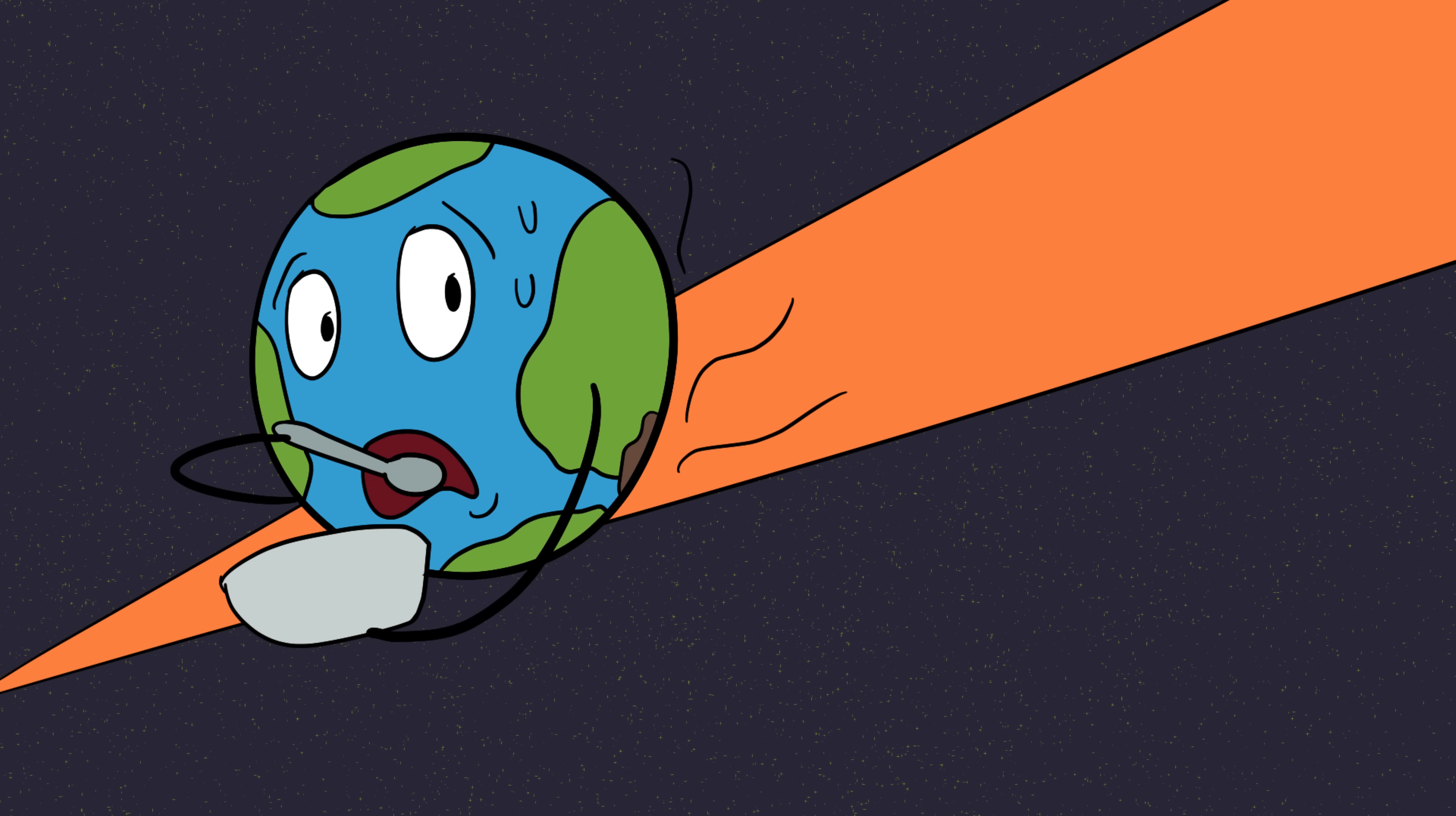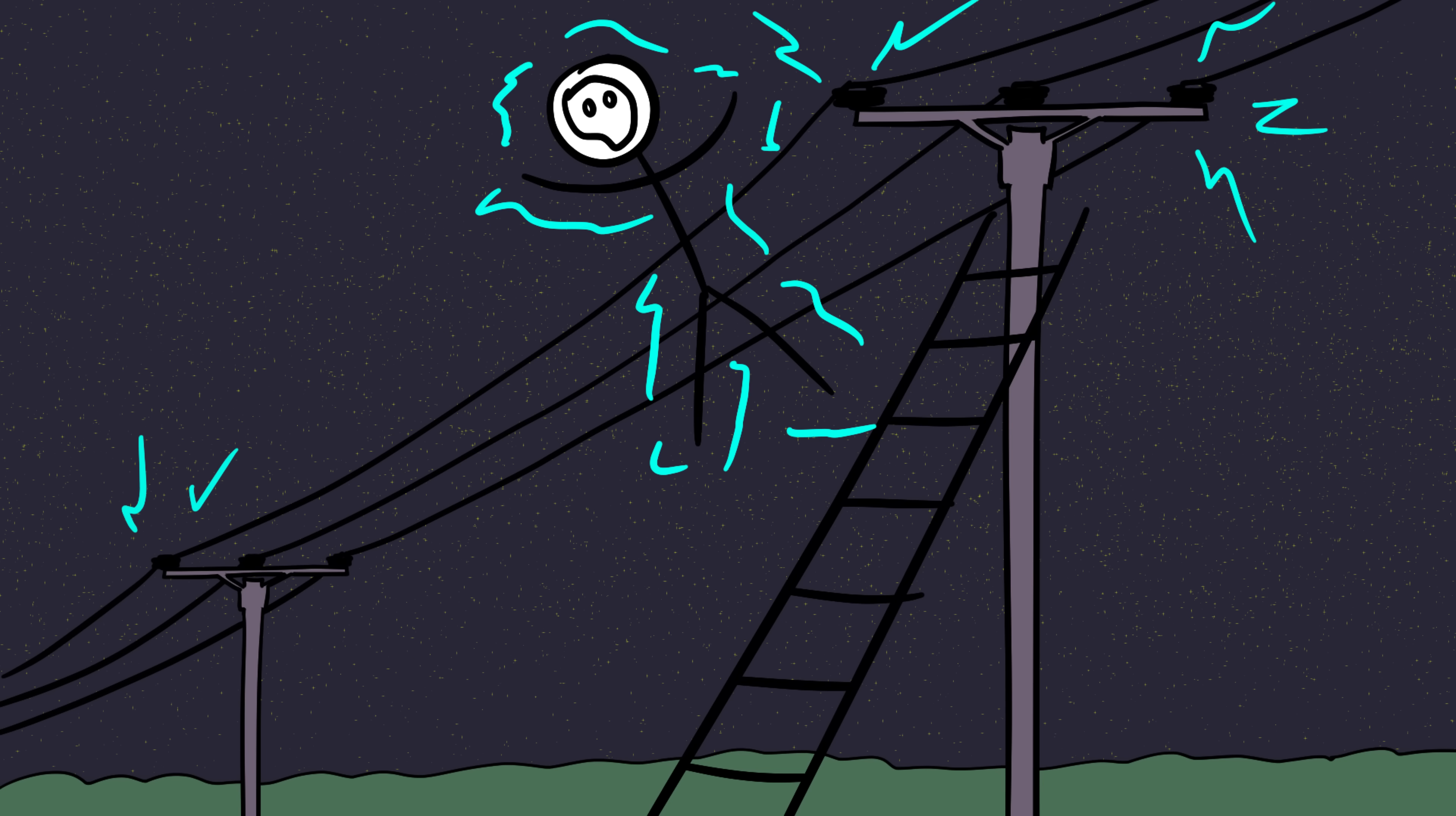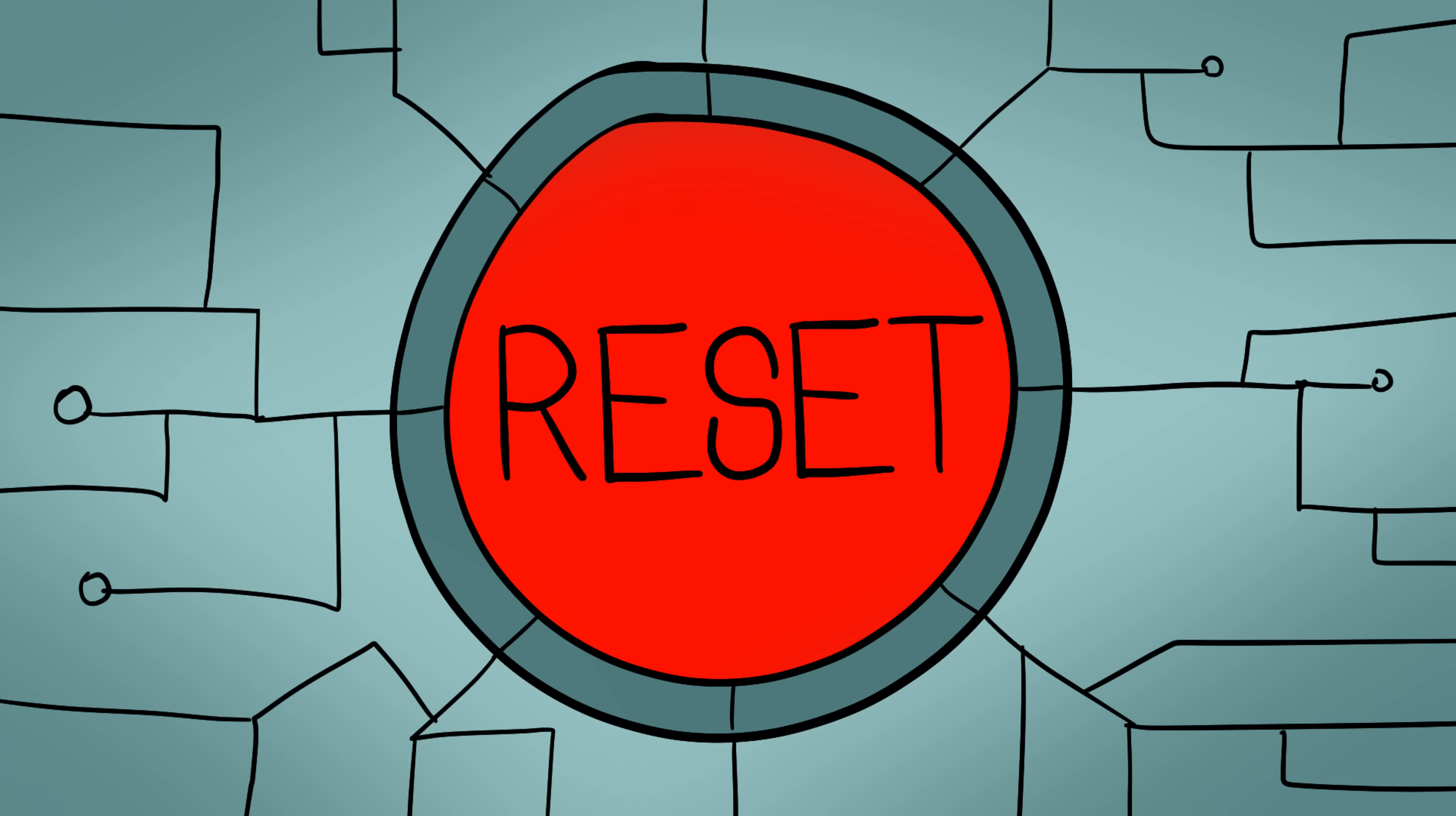The scariest part? We've already had close calls. In 1859, the Carrington event sent massive solar flares slamming into Earth. Telegraph lines sparked, operators were electrocuted, and the night sky lit up with auroras so bright, people could read newspapers by them. If the same thing happened today, it could cripple the internet, shut down global communications, and cause trillions in damage. We're talking about society hitting the reset button, not because of aliens or asteroids, but because the sun sneezed.